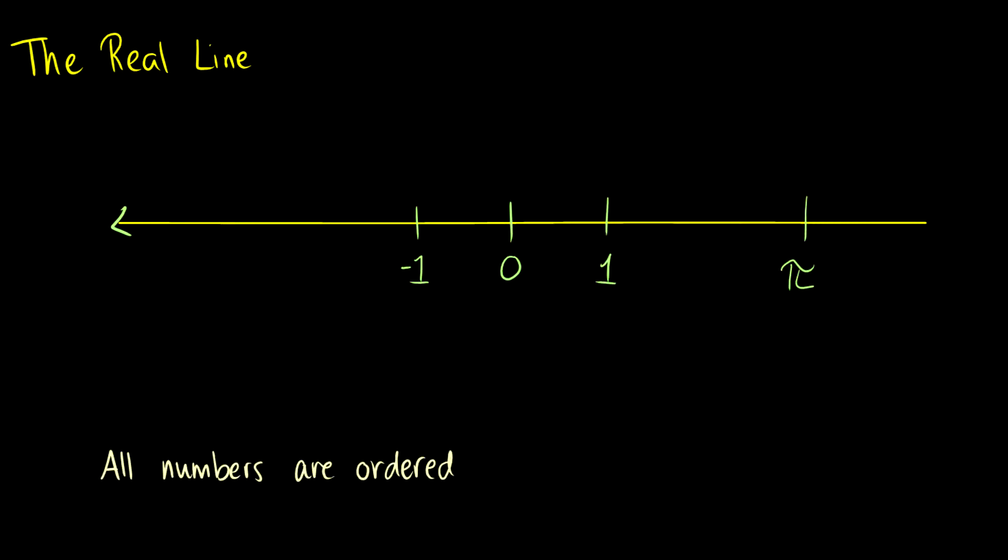Of course there is no smallest or largest number in the real line. It goes from negative infinity to infinity. It's infinite so there's no smallest or largest number but there is structure to it.